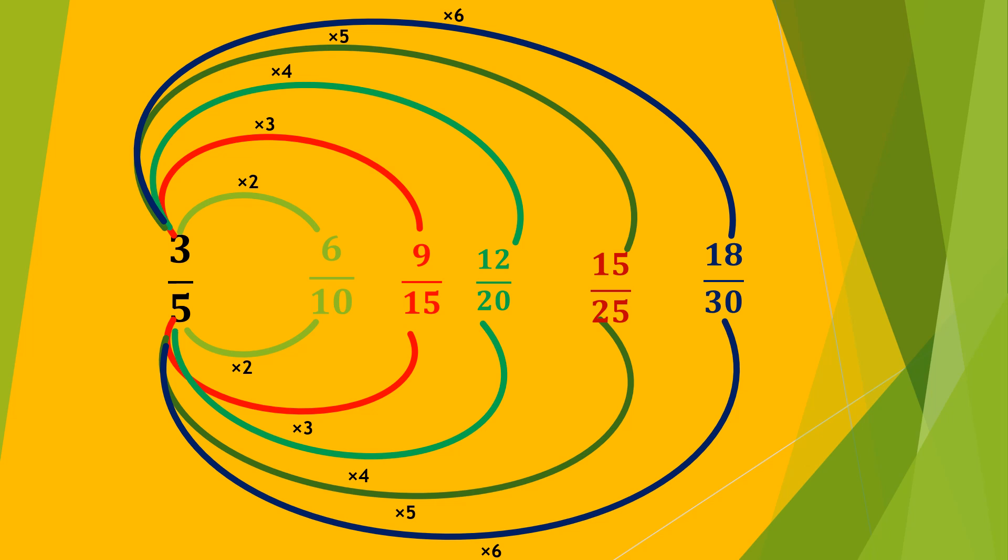Look at another example. Look at here. 3 by 5 is equal to 6 by 10. How we get? As both numerator and denominator is multiplied with 2.